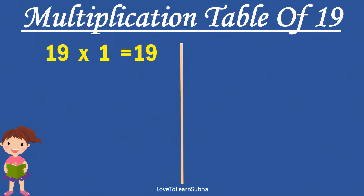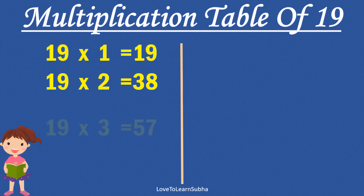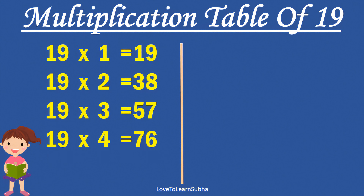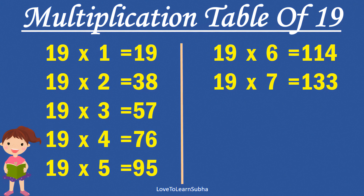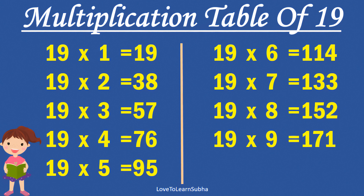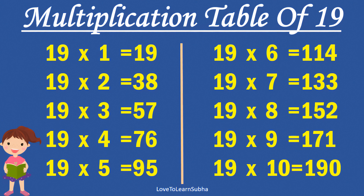Multiplication table of 19. 19×1 is 19, 19×2 is 38, 19×3 is 57, 19×4 is 76, 19×5 is 95, 19×6 is 114, 19×7 is 133, 19×8 is 152, 19×9 is 171, 19×10 is 190.